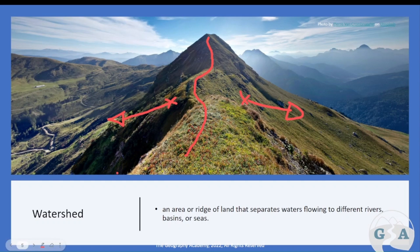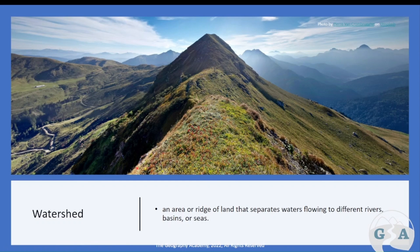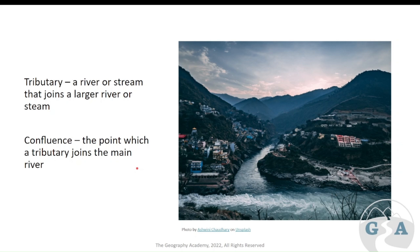Going back up to the start of the river in the mountains: a tributary is a small river that joins a bigger one, and a confluence is the point at which they meet. For example, if there's a large river curving around and a smaller one adding into it, that smaller one would be known as the tributary to the main river.